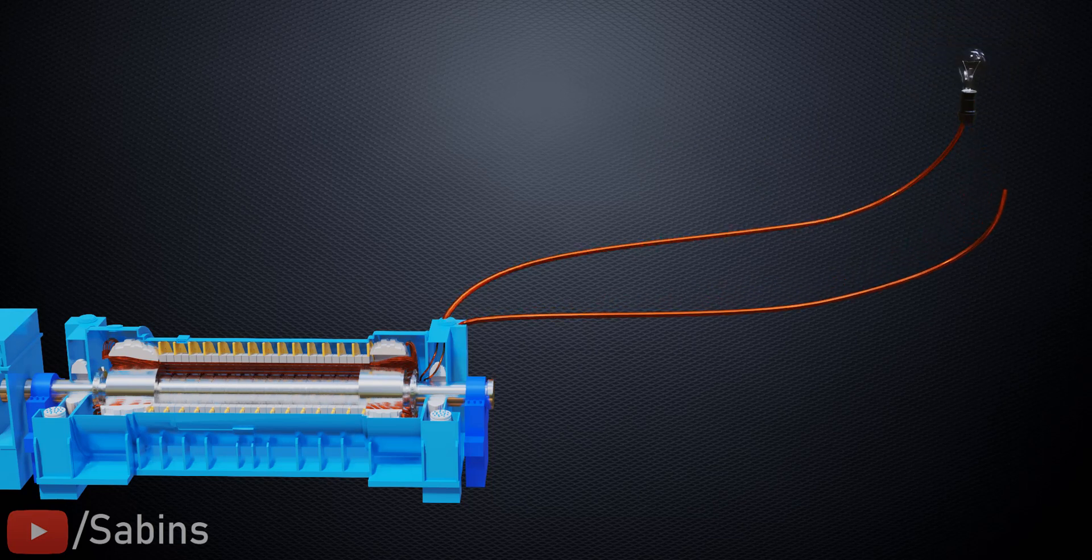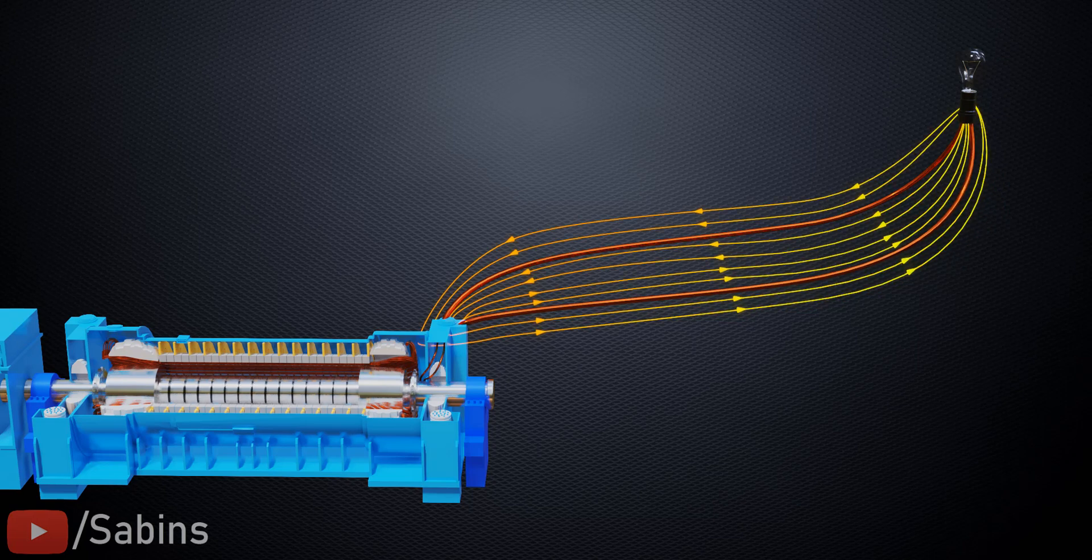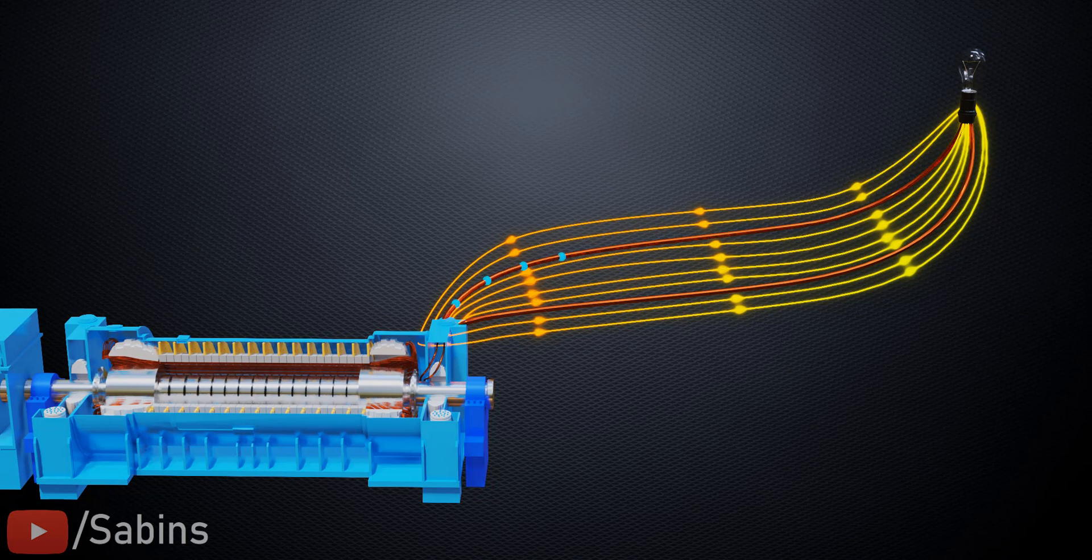When the circuit is closed, the EMF sets up an electric field along the conductor. This electric field makes the electrons flow. Obviously, these electrons flow at drift speed, which is a very low speed.